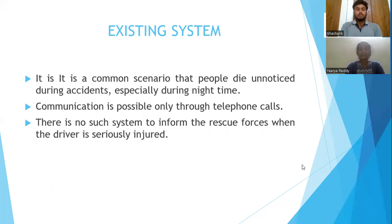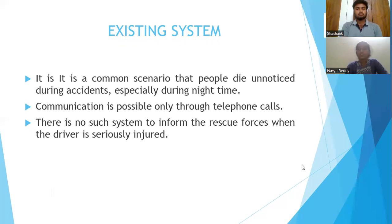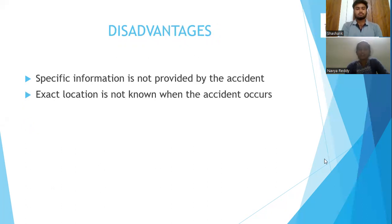In the existing system, during night times when the accident occurs, there will be no people around the accident area, so the person's death goes unnoticed because there is a delay in the information reaching nearby rescue forces, and communication is possible only through telephones, so a person's life will be at risk. Disadvantages are that specific information is not provided about the accident, there is delay in information about the accident, and the exact location of the accident will not be known.